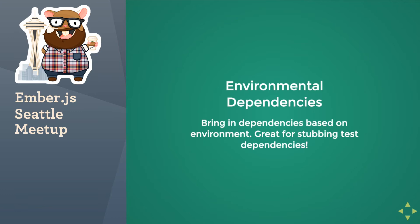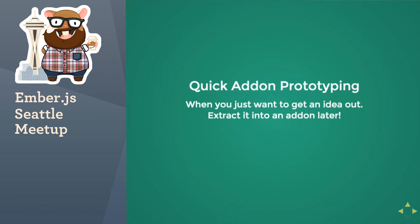Environmental dependencies are a life-saver for us. We've got specific things that get injected into our app in the live Tomcat environment that I was unable to test because we didn't have these dependencies available. So using content-for, I was able to drop a bunch of files in an in-repo add-on and inject that into my index.html file that gets generated when it runs the tests, making it available for my tests. And quick add-on prototyping is just awesome.